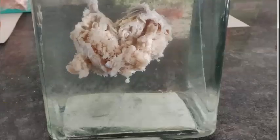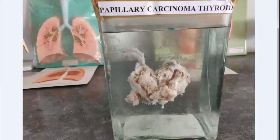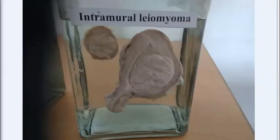Papillary carcinoma of the thyroid — you can see fibrosis and calcification; the cut surface shows a grayish-white hard scar-like appearance. In microscopy, you will see papillary structures, Orphan Annie eye nuclei, clear ground-glass appearance, psammoma bodies, and intranuclear inclusions.